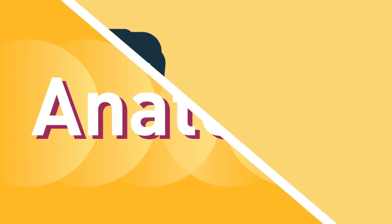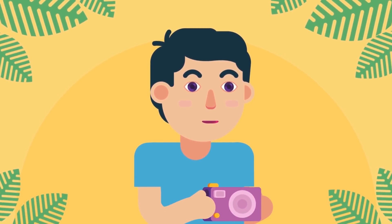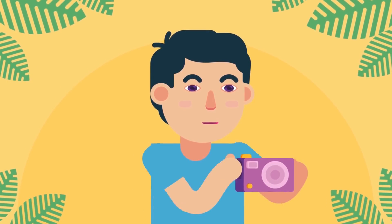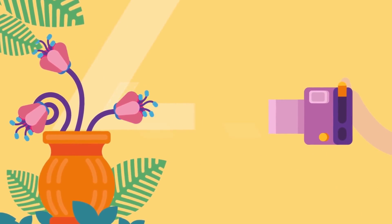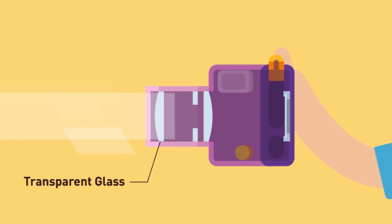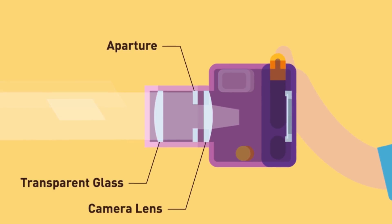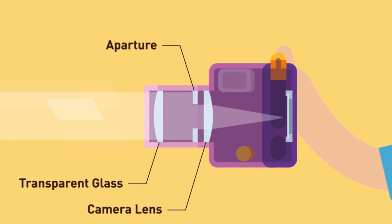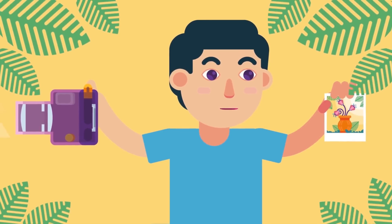Anatomy. Before we describe myopia, let's compare the eyeball to a camera for better understanding. When we take a picture, light after reflecting from an object enters the camera and passes through the following: firstly, a transparent glass in front of the aperture; secondly, a camera lens that helps in focusing light rays; and lastly, a camera film on which light is focused for a clear picture.